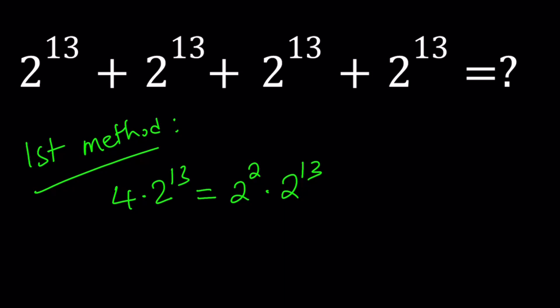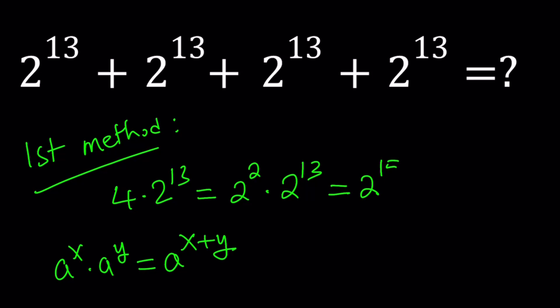Now using rules of exponentiation, we can safely say that since the bases are the same, we can add the exponents. So we have something like a to the x times a to the y equals a to the power x plus y. So from here we get 2 to the power 2 plus 13, which is 2 to the power 15.